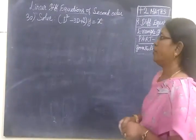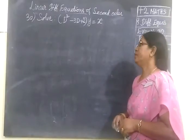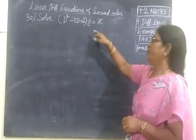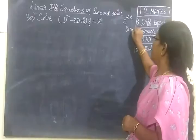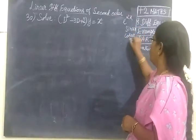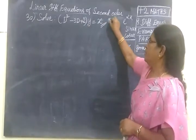Next we see example 30 part 155: D squared minus 3D plus 2 of y equal to x. First time we have seen e power αx, then we have seen sin ax, then cos ax. Now we are seeing x. So in the right hand side you find x.